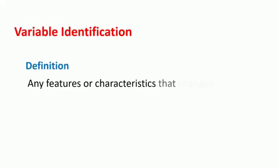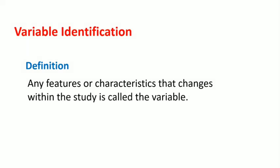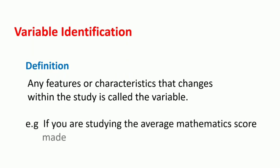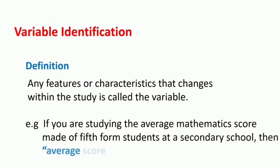Let us begin with the variable identification. Any feature or characteristics that changes within the study is called the variable. For example, if you are studying the average mathematics score made by fifth form students at a secondary school, then average score will be the variable.